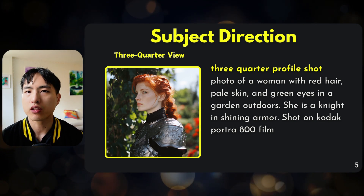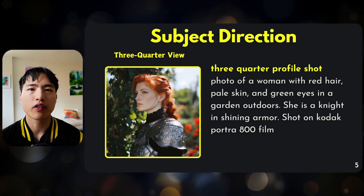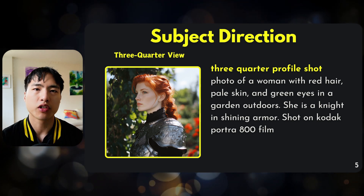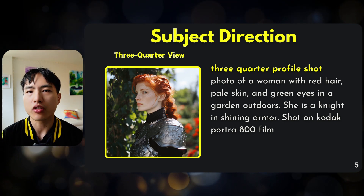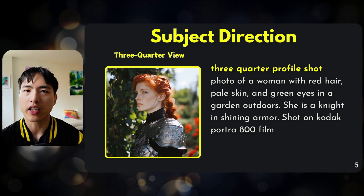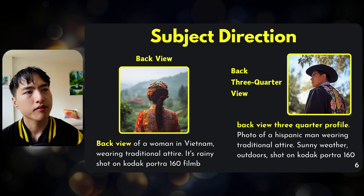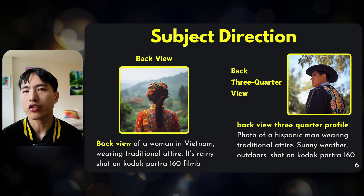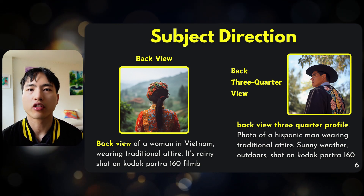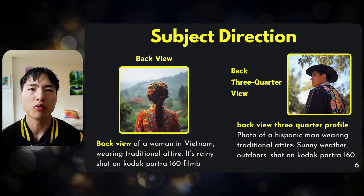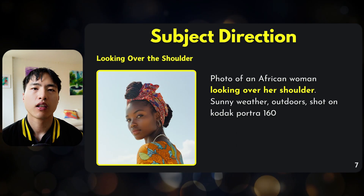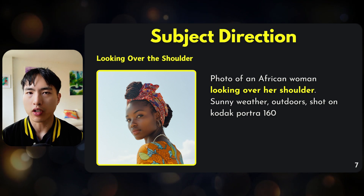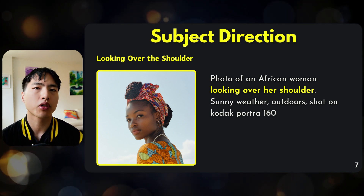The three-quarter view rotates the front view about 45 degrees, and it's probably the most common default Midjourney camera angle — if you just prompt Midjourney for a photo of someone, this is probably the angle you're going to get. We can also go behind the subject and take a back view shot, or a back three-quarter shot, where they're facing away but the head is slightly tilted so we can see some details on their face. An effective keyword is 'looking over the shoulder.'